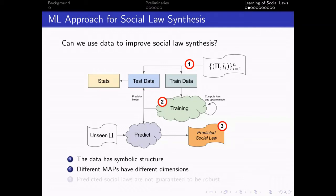Also, different multi-agent problems have different dimensions. More agents, more objects, and we have to find a model, a machine learning model, that is not sensitive to the different dimensions of the input. And finally, the predicted social laws are not guaranteed to be robust, so we have to come up with a process that finds mistakes and fix them.